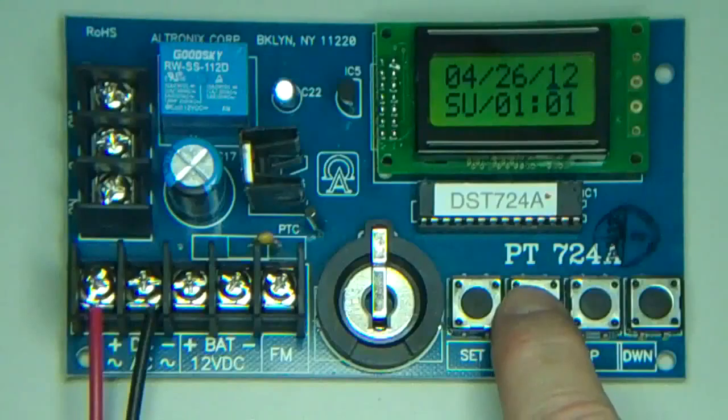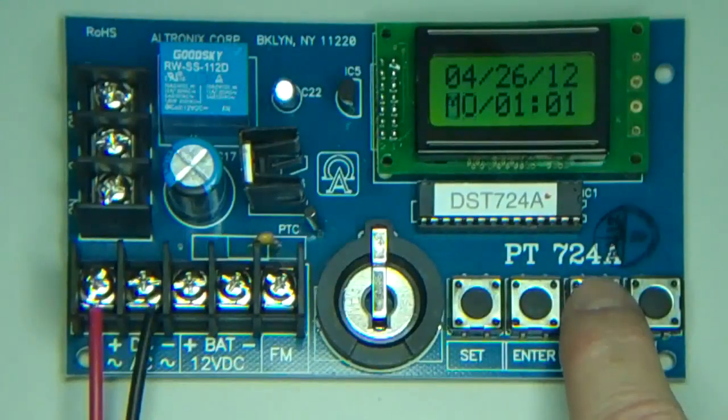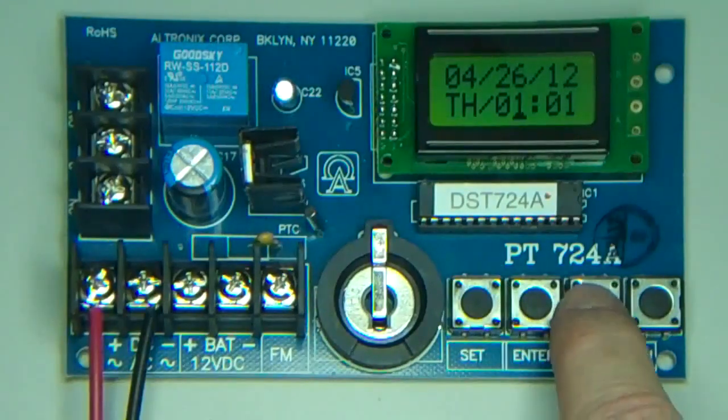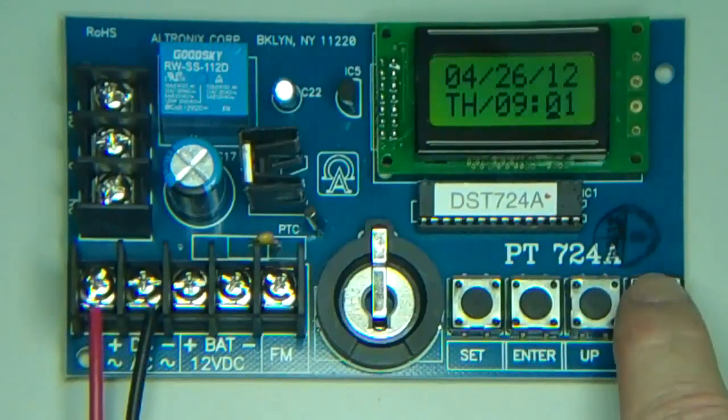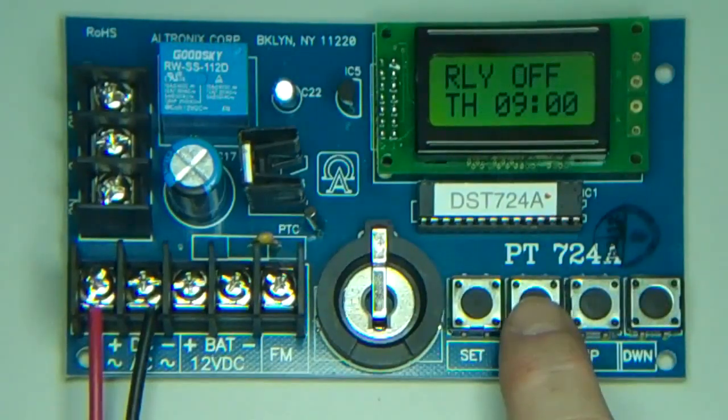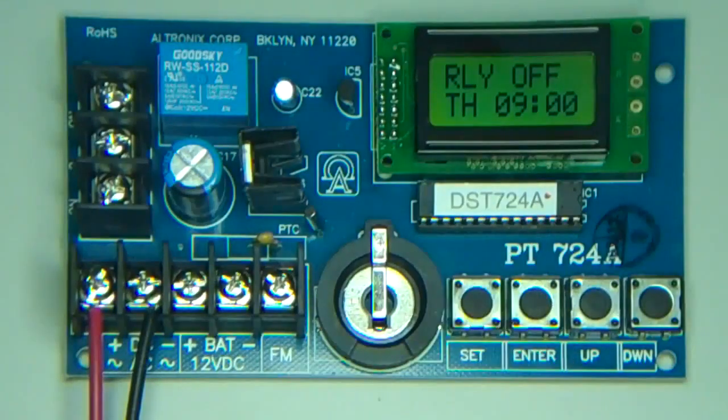Then we'll move on to the day, changing it to the correct day, next to the time. Be sure to press the enter button after each selection. At nine o'clock, you'll notice that the relay says off.